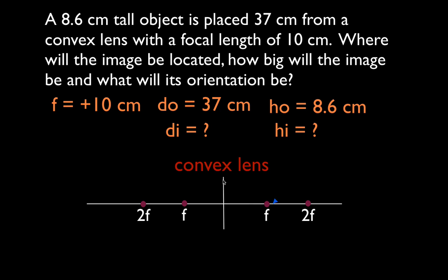Now, this is not to scale necessarily, but I know that if my object is 37 centimeters away, f is 10, 2f is 20, so 37 is out here. My object is going to be somewhere out here and like I said this is not to scale.